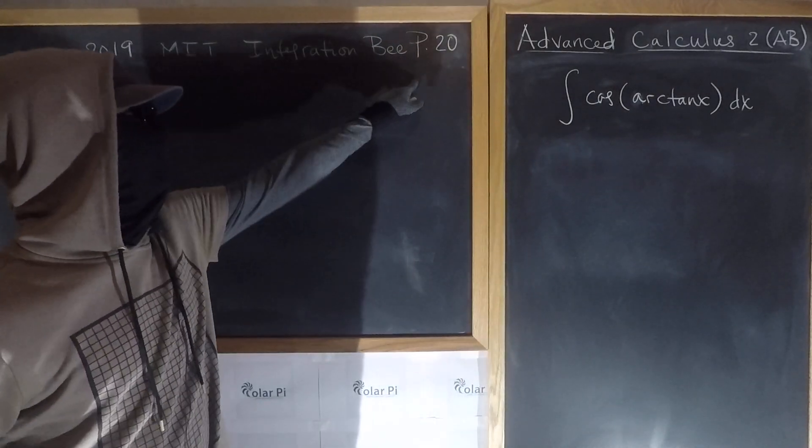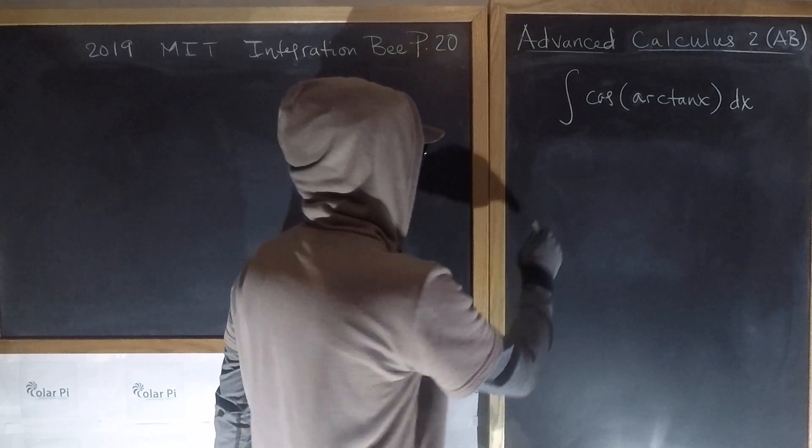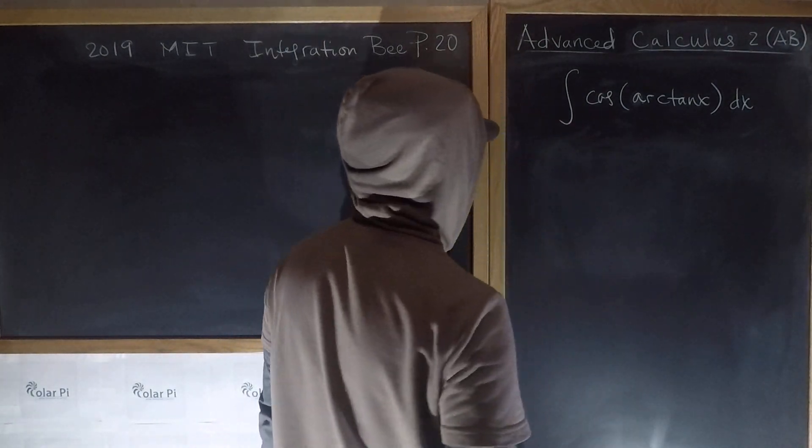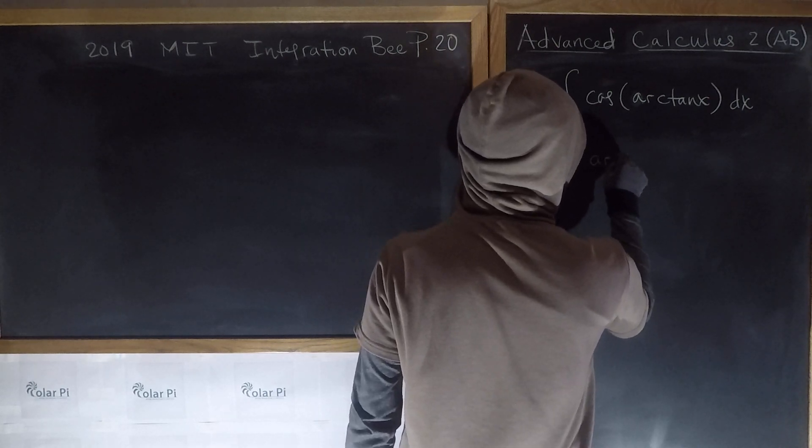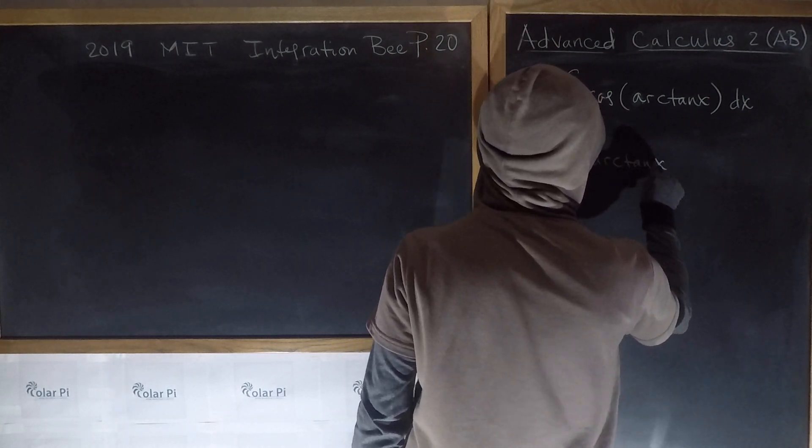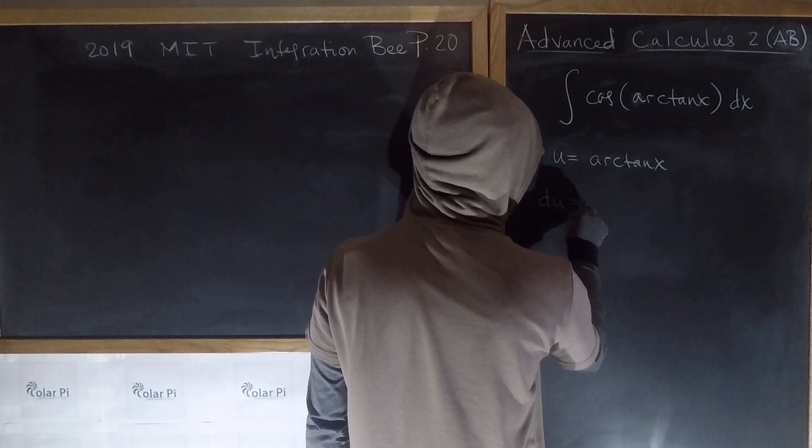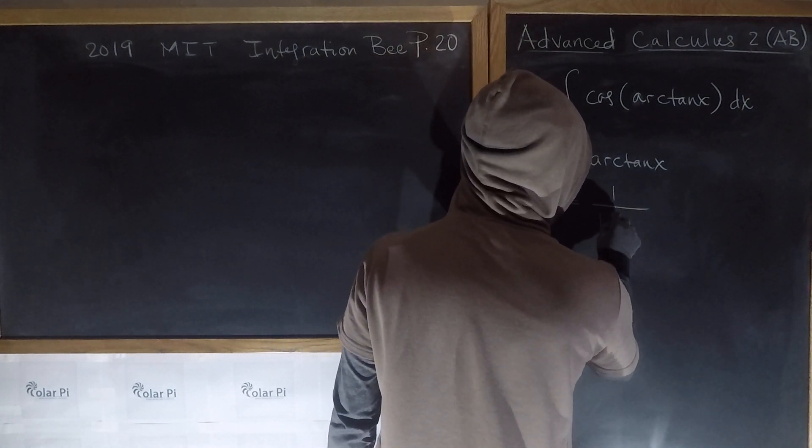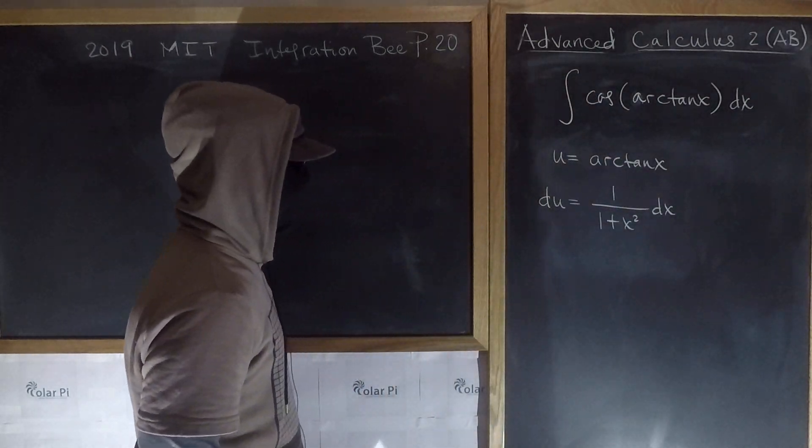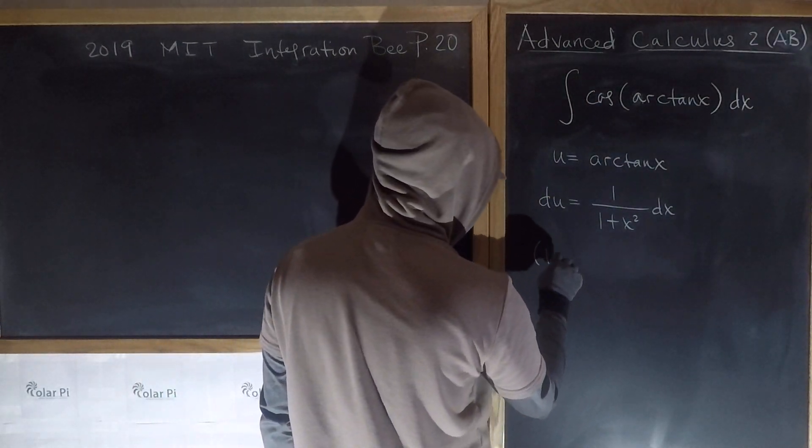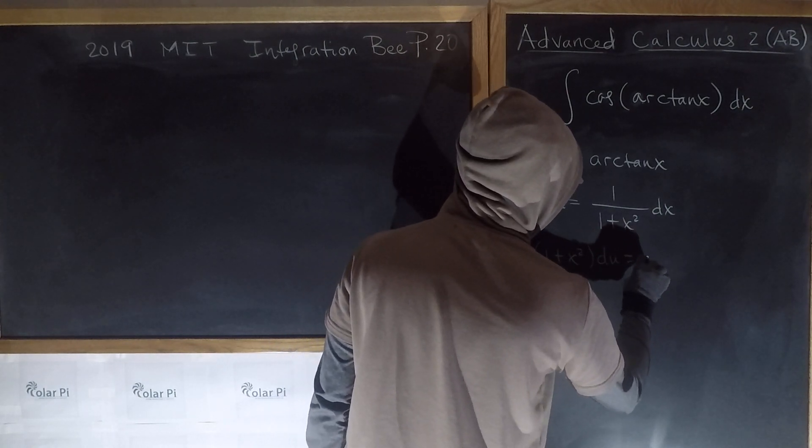Okay, all right. That's for last, perhaps. Actually no, this wasn't the most interesting question, but yeah, to start, let u equal arctan(x). If u is arctan(x), then du is going to be 1 over 1 plus x² times dx. So 1 plus x² du is equal to dx.